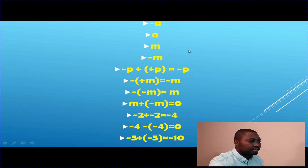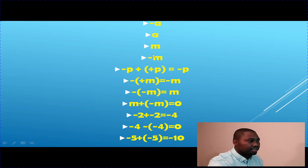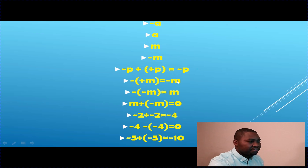Likewise, what is the opposite of negative M? That will be positive M. So the opposite of positive P is negative P. We can read it as: negative P plus positive P equals zero, or the opposite of P added to positive P equals negative P. The opposite of positive M is negative M, same as saying minus plus M equals negative M.